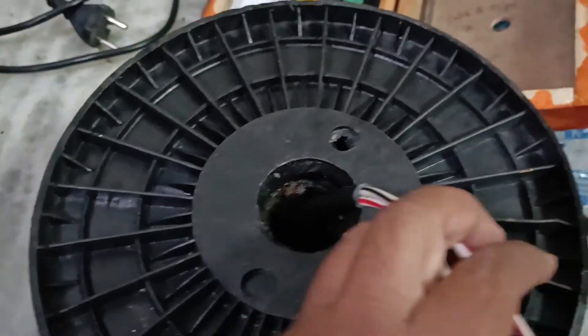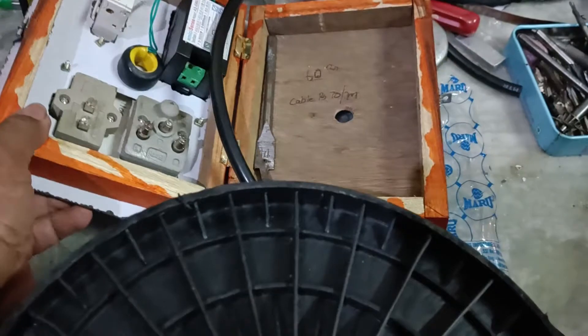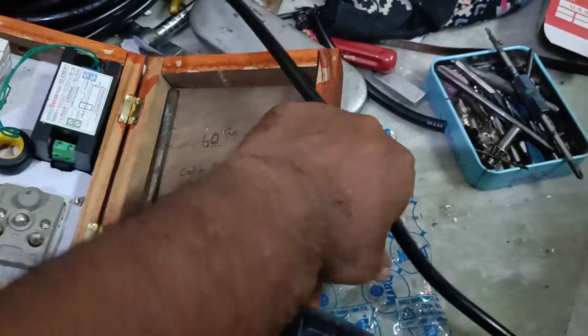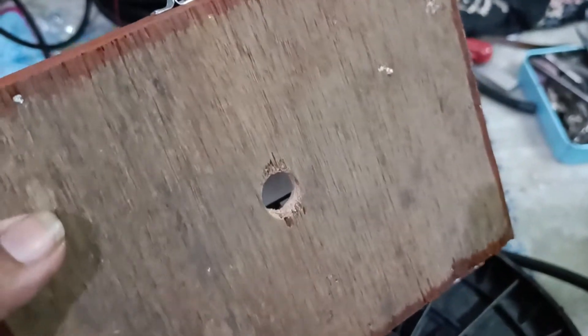Now it's time for us to assemble the switch box that we have made. I drilled a hole on the bottom side of the switch box through which this wire has to go in.